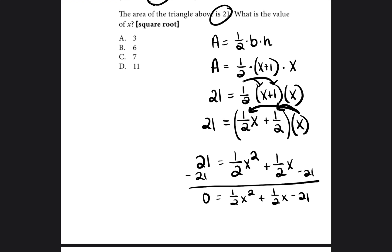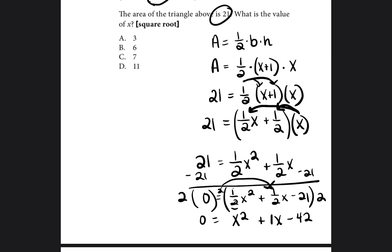I'm going to show you how to get rid of that fraction, because I find fractions more difficult to work with. The easiest way is to multiply both sides of the equation by the denominator, which is 2. Two times zero is zero; two times 1/2 cancels out leaving x²; two times 1/2 again cancels giving plus x; and two times negative 21 is negative 42. So we've eliminated the fractions by multiplying both sides by 2.